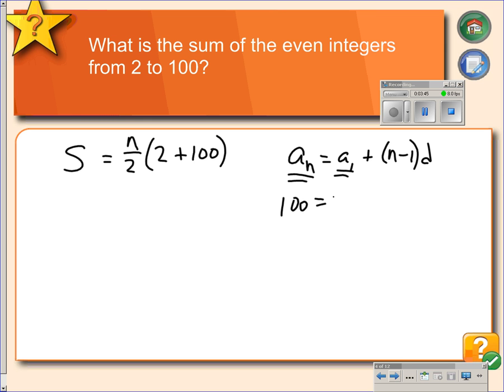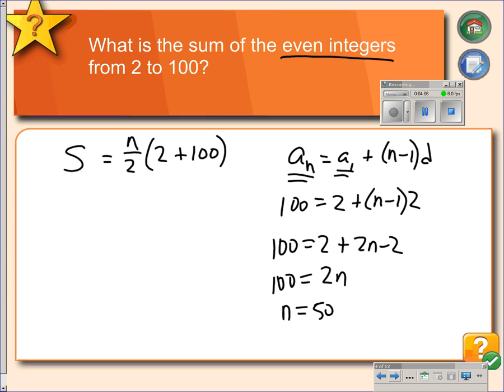Our last term is 100. Our first term is 2, and our common difference is, we're talking about even integers, common difference is 2. So if we solve this formula for n, we get 100 equals 2 plus 2n minus 2. So 100 equals 2n. Dividing by 2, we get 50. So we know there are 50 terms in this sequence.